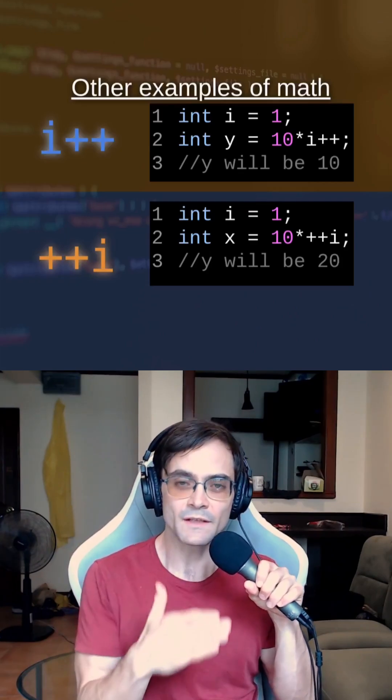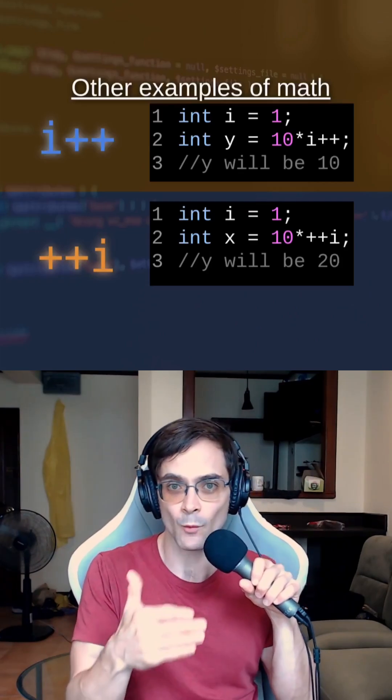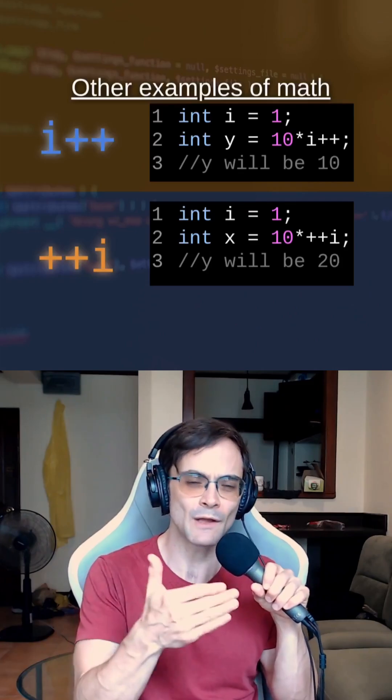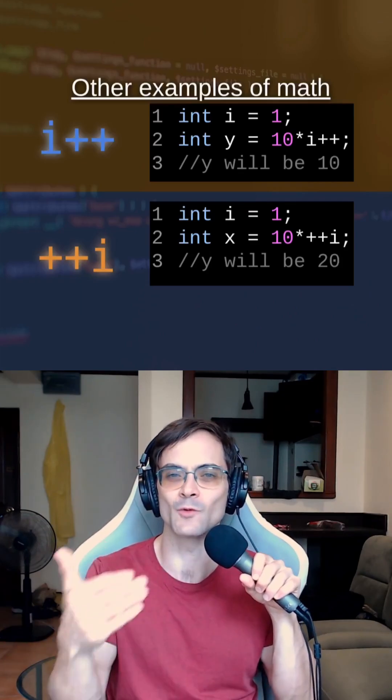The bottom gives you 20. This is prefix increment. So we add 1 first, getting 2, then we plug that 2 in to do the math, getting 20 for Y.